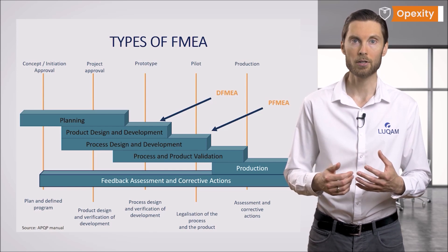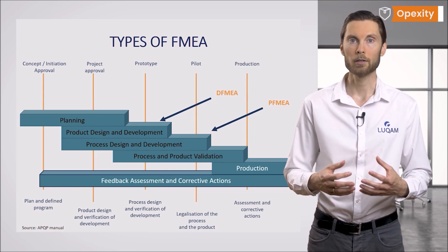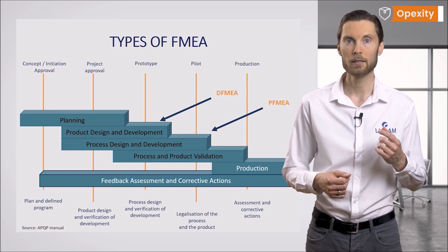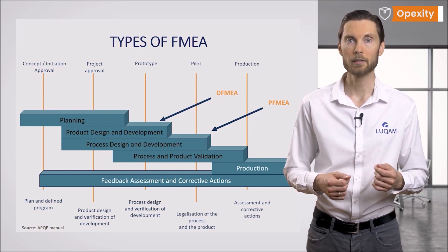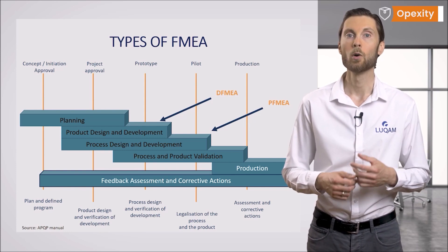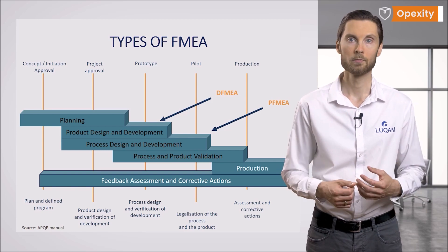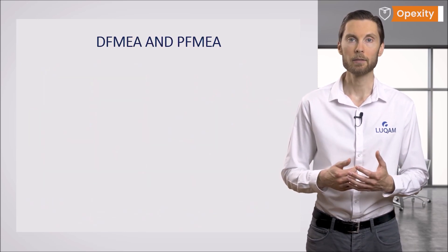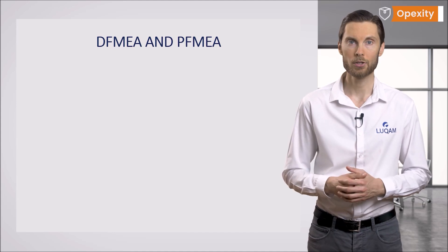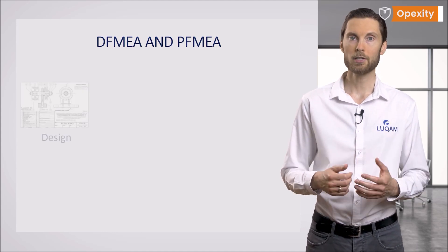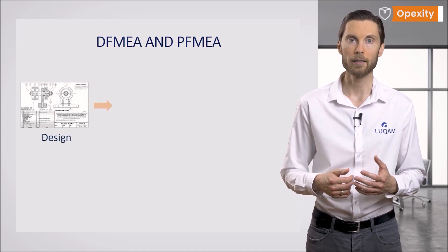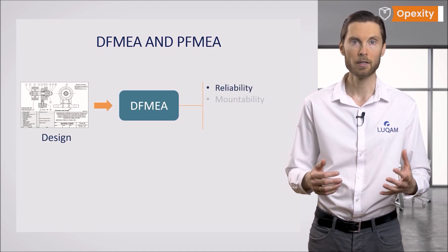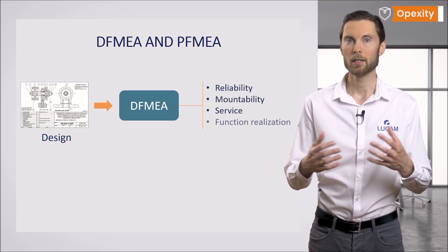In further design stages, according to the APQP concept, process and product validation appear, and the whole process ends with the approval of the production process and the product for production. In the next part, we will focus on DFMEA and PFMEA. The goal of the DFMEA is to identify weak points in the product — its task is to find and then limit or eliminate the causes which can reduce reliability, prevent operation, or make it difficult to mount.